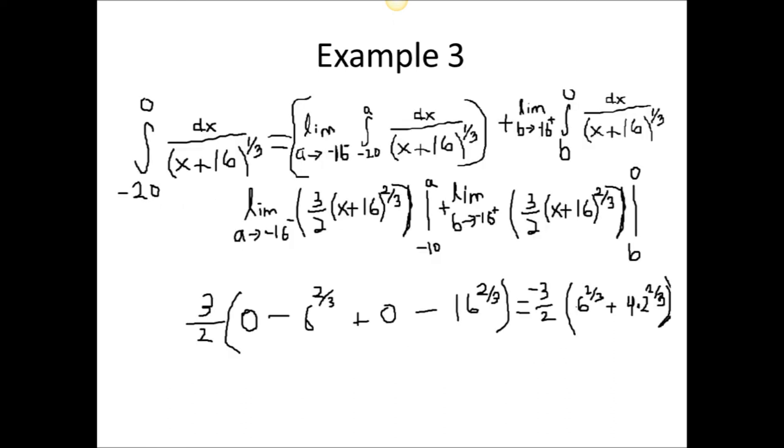Example 3. As we have earlier discovered, negative 16 is an undefined point on the interval. Unlike how we performed the last two problems, we will not be setting up the interval as a letter approaches the single point. Since this point is in the middle of the interval, we need to set up two separate integrals with two separate limits and then add them together.